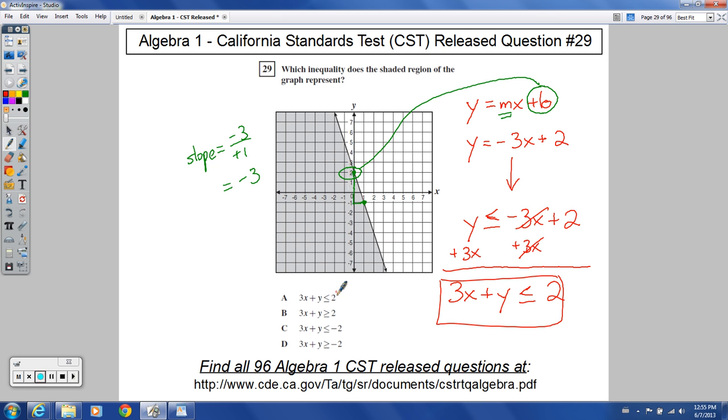Looking at our answer choices, it looks like that matches up with choice A right there. Not this one—those are both negative 2. This one, the sign is pointing the wrong way. So number 29, choice A.